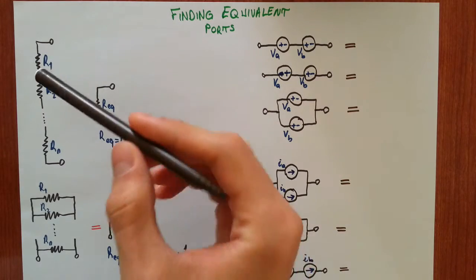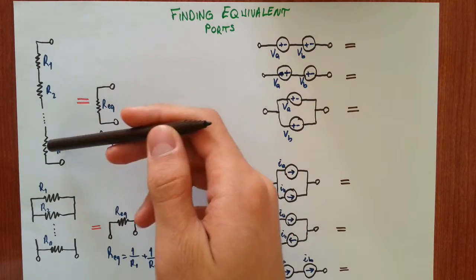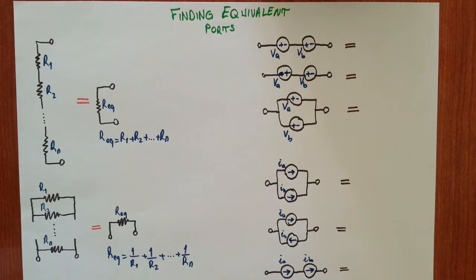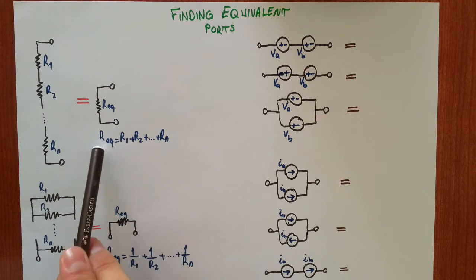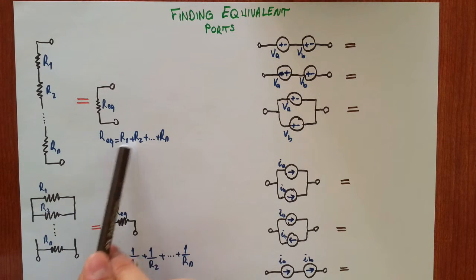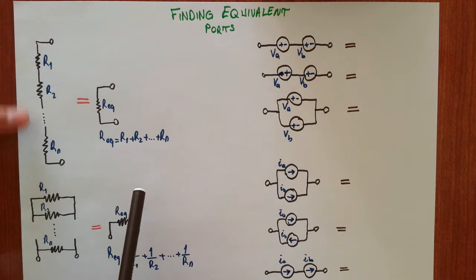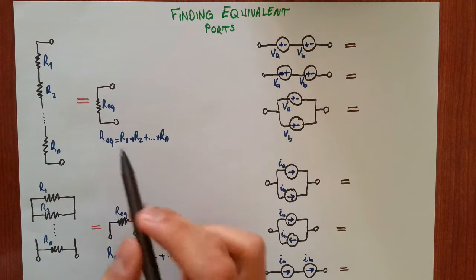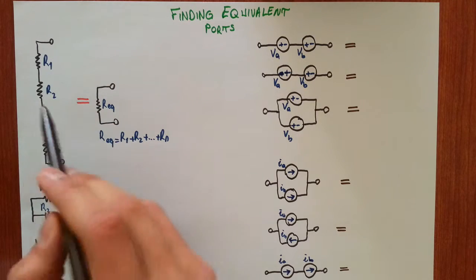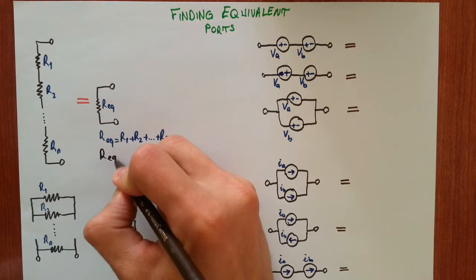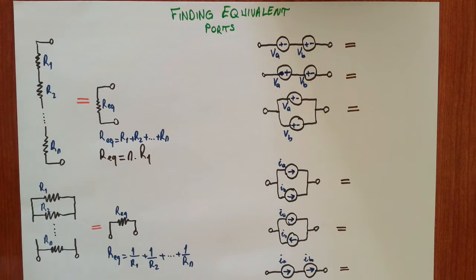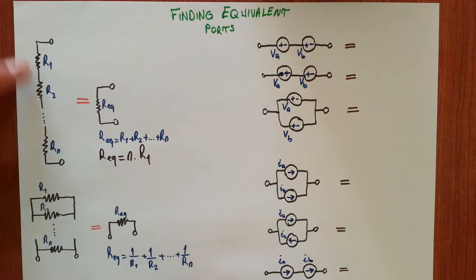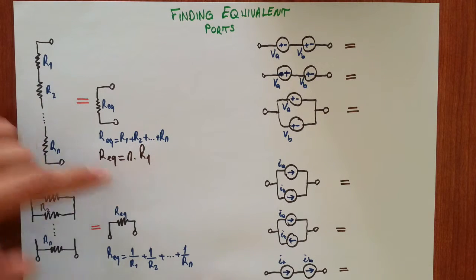I will start with the resistors. If you have N resistors in series, you can reduce them into one single resistor. The resistance value of that equivalent resistor is the sum of all resistances that are in series. If they are all equal to each other, the equivalent is then N times the resistance value of one of them.